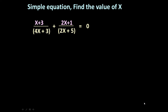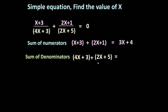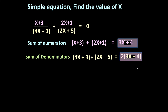Let us solve a few more problems based on the same principle. Suppose the equation is (x + 3)/(4x + 3) + (2x + 1)/(2x + 5) = 0. Sum of numerators: x + 3 + 2x + 1 = 3x + 4. Sum of denominators: 4x + 3 + 2x + 5 = 6x + 8 = 2·(3x + 4). So k = 2, and we use 3x + 4 = 0, giving x = -4/3. This is the answer.